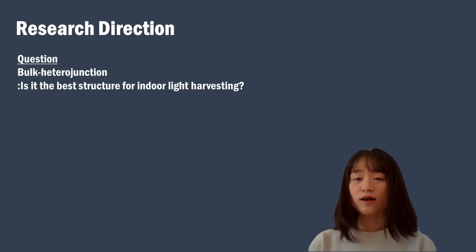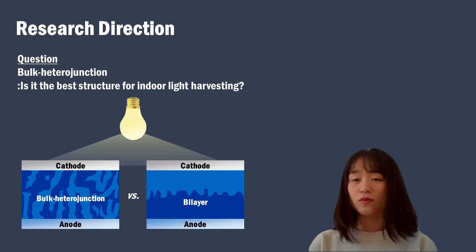Most highly efficient organic solar cells can be achieved by using bulk-heterojunction as a photoactive layer. Here is a question: is it the best structure for indoor light harvesting? To answer this question, in this work, we compared device performance and their characteristics between bulk-heterojunction and bilayer structures under indoor light condition.